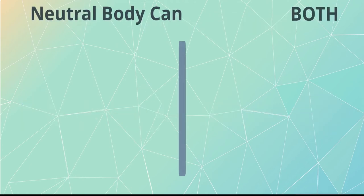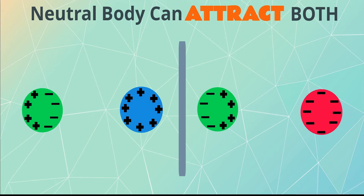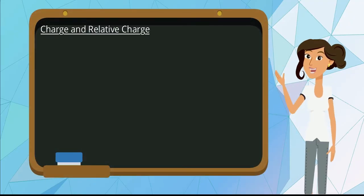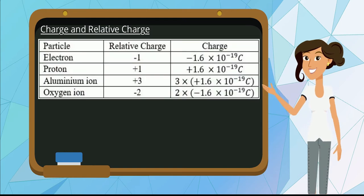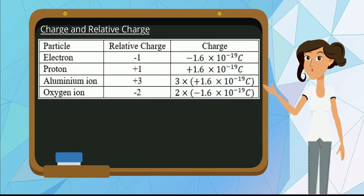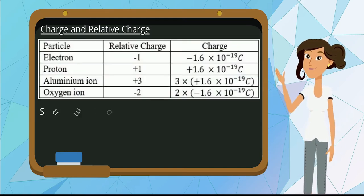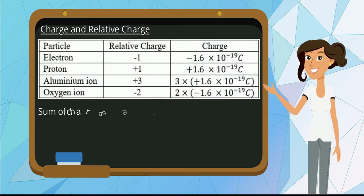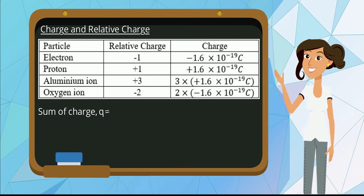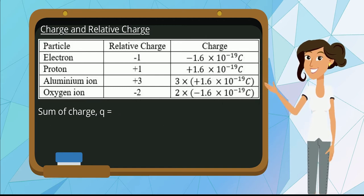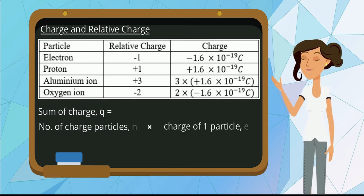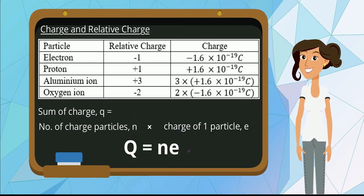A neutral body can be attracted by another body which has either positive or negative charge. Electrons have a relative charge of negative 1, while protons have a relative charge of positive 1. The sum of charge is equal to the number of charged particles times the charge of one particle, or q is equal to NP.